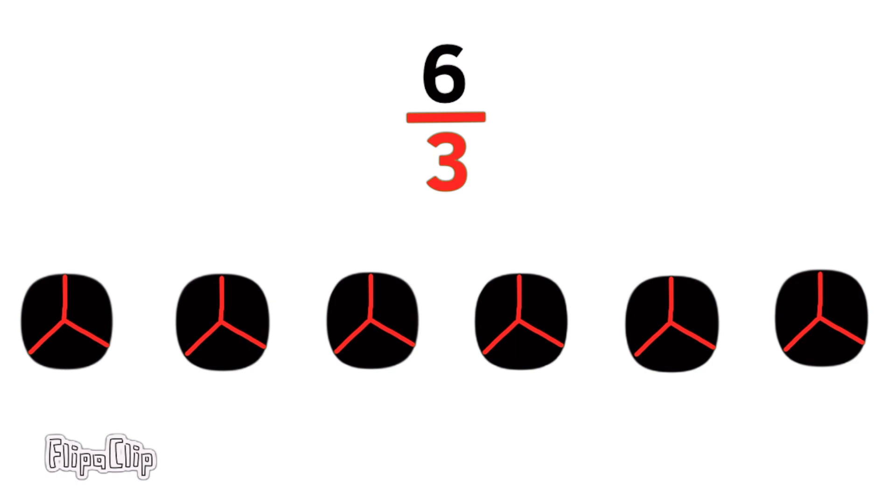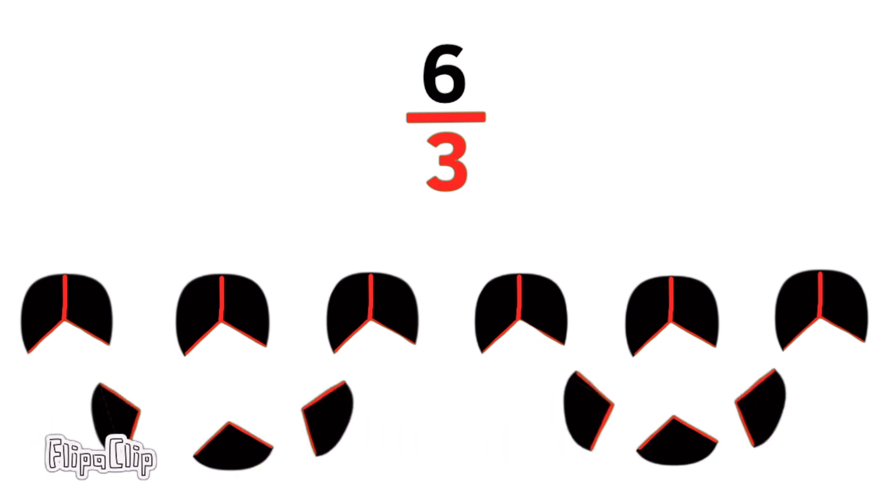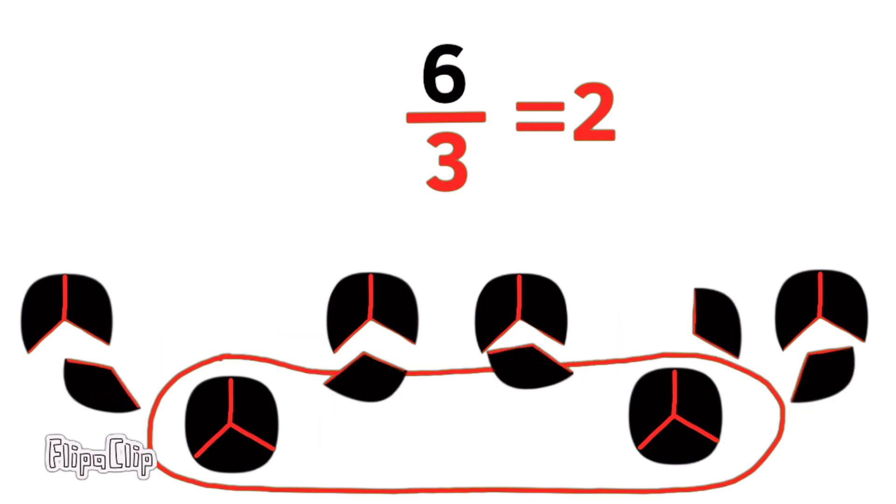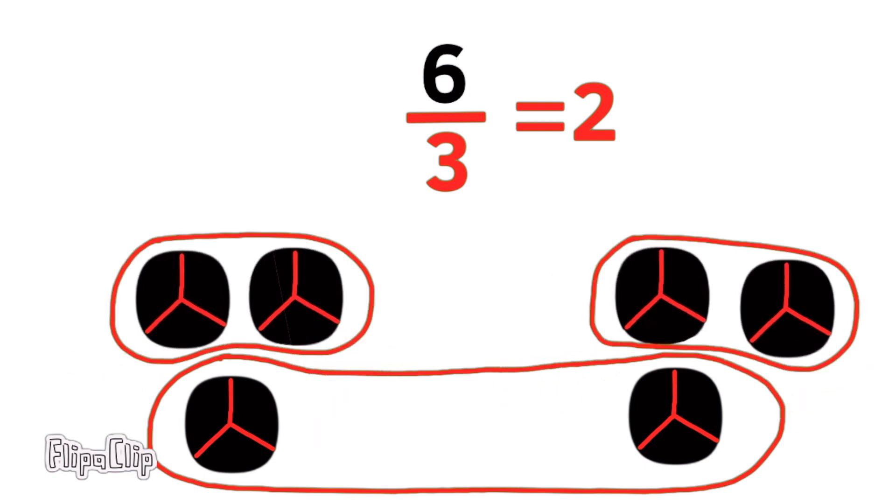Let's take out the six thirds and reassemble them and see how many units we get. Six divided by three, or six thirds equals two. If you count the thirds, you'll see that for every two units, there's six thirds. So six divided by three, or six thirds equals two.